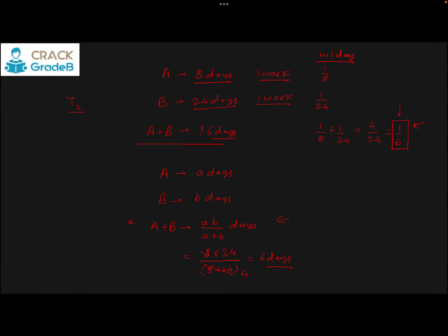That is why we have another method called the LCM method, which is a better method to solve a slightly different type of question. In the LCM method, we consider the total work as the common multiple of the days given by all the people. If A does a work in 8 days and B does a work in 24 days, a common multiple of 8 and 24 is 24. We consider the total work as making 24 hats.